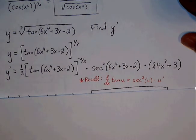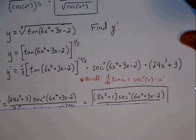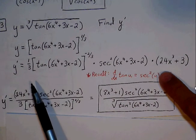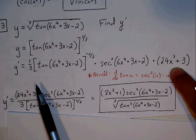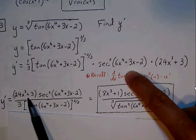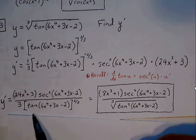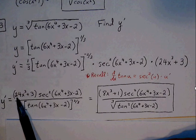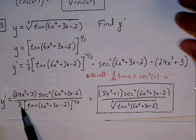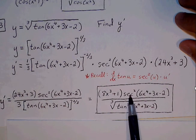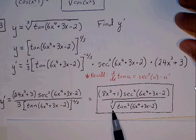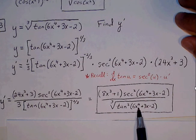Now we combine everything into one fraction. The numerator has 24x cubed plus 3 times secant squared of 6x to the 4th plus 3x minus 2, and the denominator is 3 times tangent of 6x to the 4th plus 3x minus 2 raised to the 2 thirds. We can factor the 3 out of the numerator to cancel with the denominator's 3, leaving 8x cubed plus 1 times secant squared of 6x to the 4th plus 3x minus 2, all over the cube root of tangent squared of 6x to the 4th plus 3x minus 2.